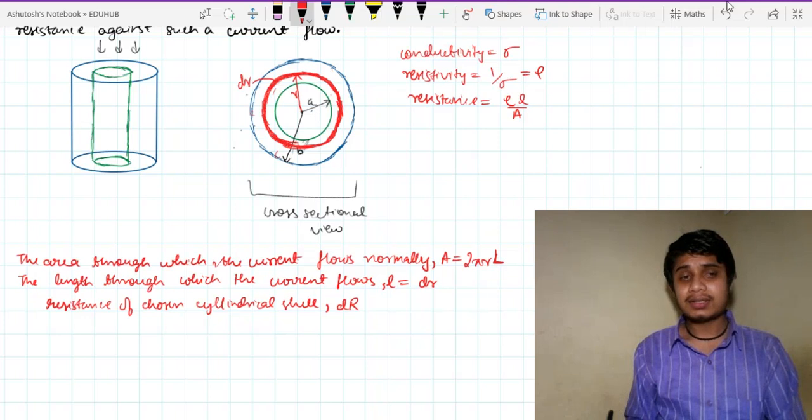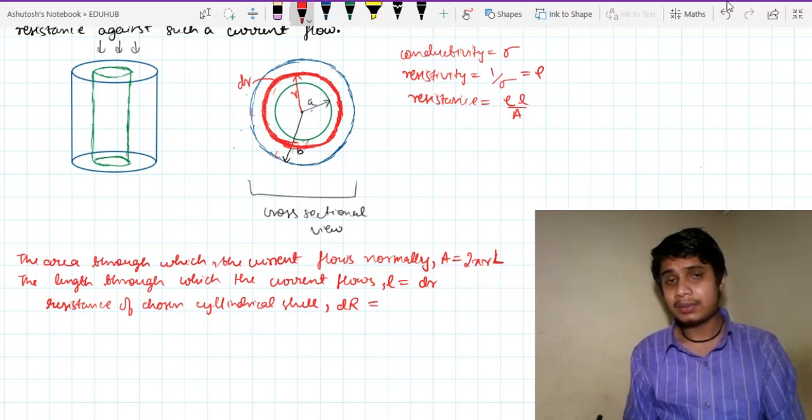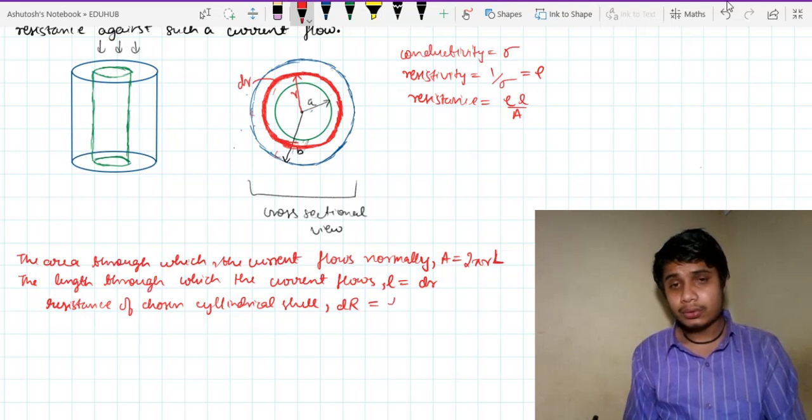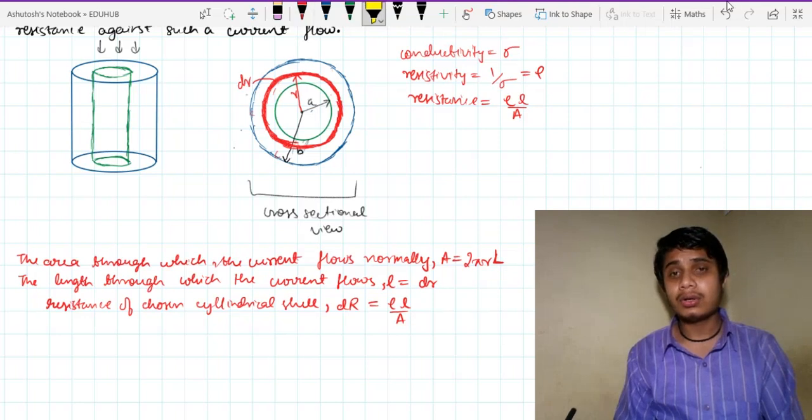The resistance of this chosen shell I represent by dR. It will be rho l upon A as I mentioned. Resistance is always rho l upon A.